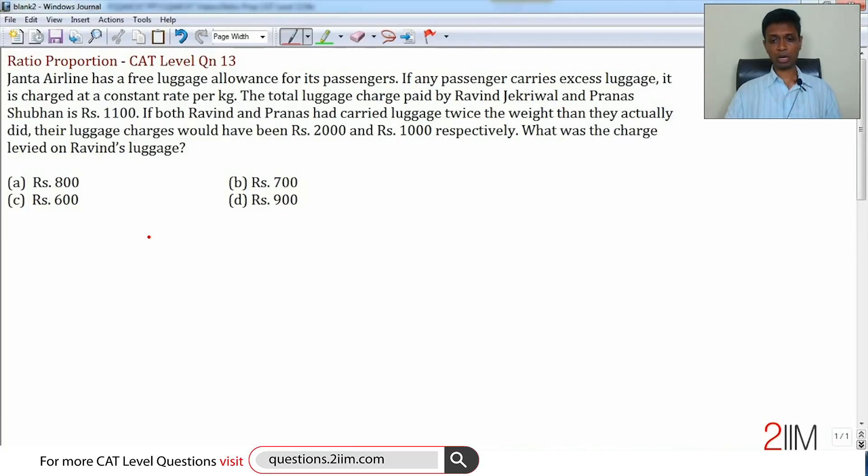The total luggage charge paid by Ravind, Pranas, and Shubhan is 1100. If both Ravind and Pranas had carried luggage twice the weight than they actually did, their luggage charges would have been 2000 and 1000 rupees respectively. What was the charge levied on Ravind's luggage?